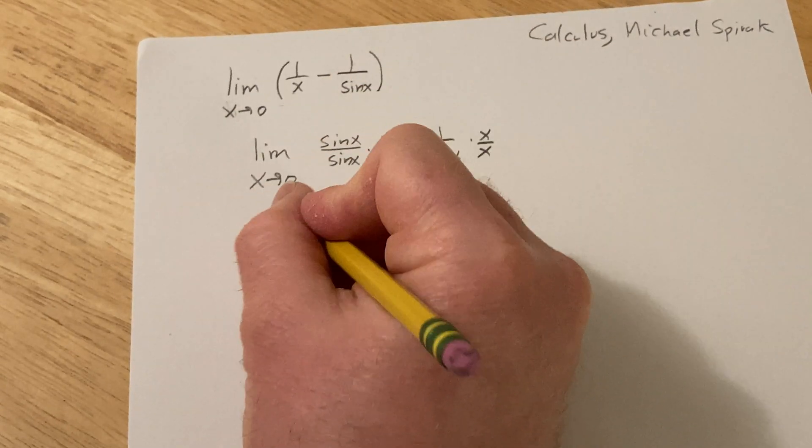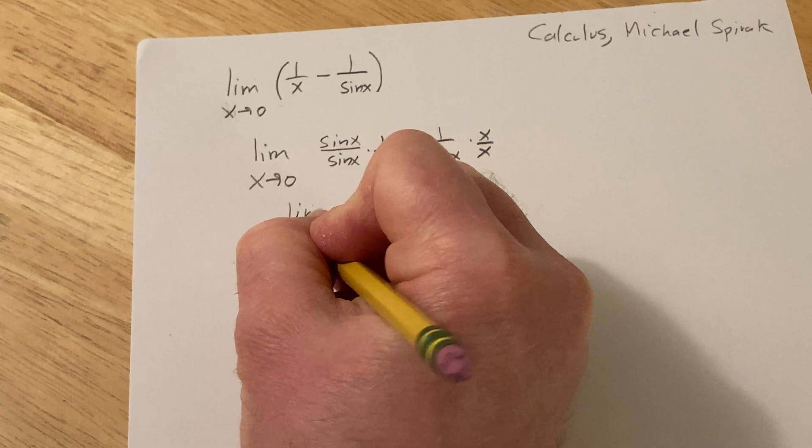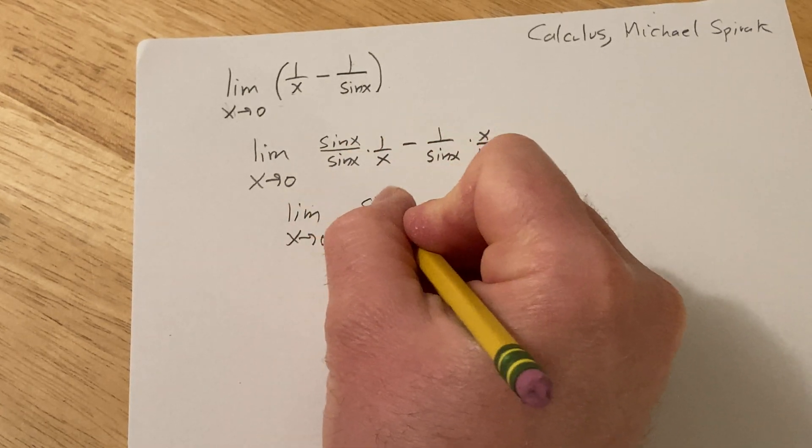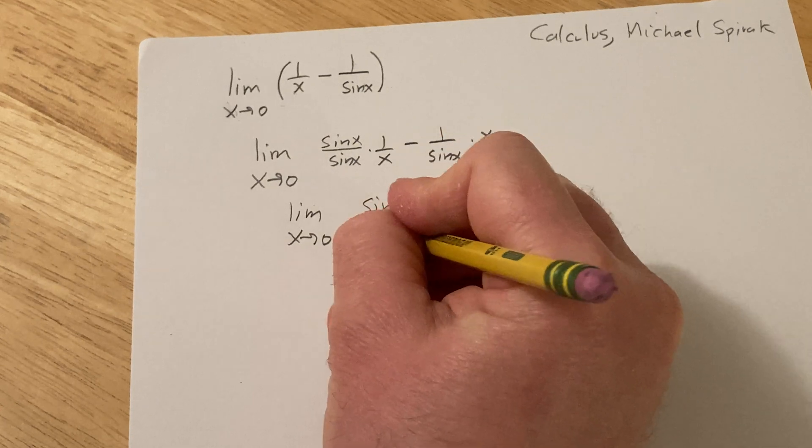You multiply by 1 so that you can create a common denominator. Okay, so this would be sin x minus x over x sin x.